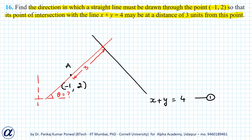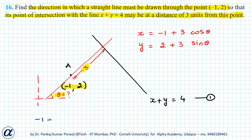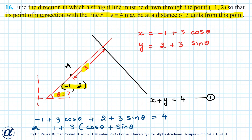The coordinates of the point of intersection for this line can be written in terms of the point (-1, 2), the distance 3, and the unknown angle theta: x equals minus 1 plus 3 cos theta, and y equals 2 plus 3 sin theta. Now this point also lies on x plus y equals 4, so substituting: minus 1 plus 3 cos theta plus 2 plus 3 sin theta equals 4, which gives 1 plus 3(cos theta plus sin theta) equals 4.